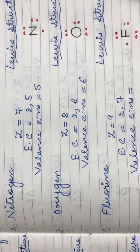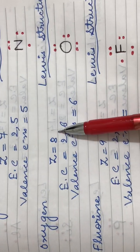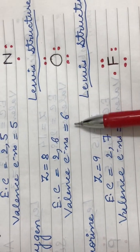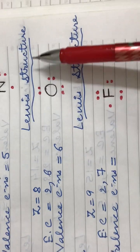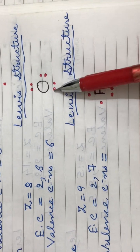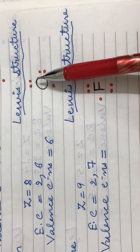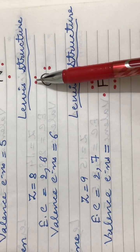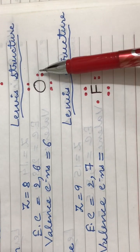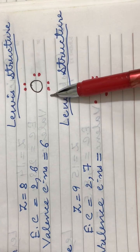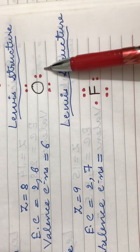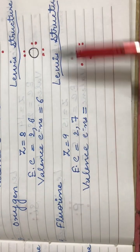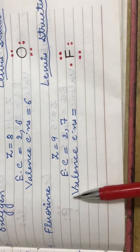Coming to the next element, oxygen. It has an atomic number of eight. Its electronic configuration is 2,6 and it has six electrons in its outer shell. Therefore, the Lewis structure for oxygen is the symbol O with six dots shown in pairs around it — two at the top, two on one side, and two at the bottom, giving six total.